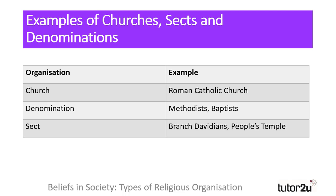We can compare some examples from each of these religious organisations. Examples of churches include the Roman Catholic Church and Islam. Denominations could include Methodists and Baptists, whereas sects — we could use the example of the Branch Davidians and the People's Temple.